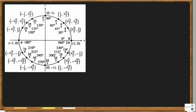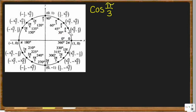The first and easiest one to find is cosine of theta. We're going to do the cosine of pi over 3. When you do the cosine of pi over 3, you want to first find pi over 3 on the unit circle. This makes our reference triangle. Cosine is going to be the x-coordinate and sine is going to be the y-coordinate. We have the two coordinates 1/2 and square root of 3 over 2. The first coordinate is cosine, so the cosine of pi over 3 is 1/2.